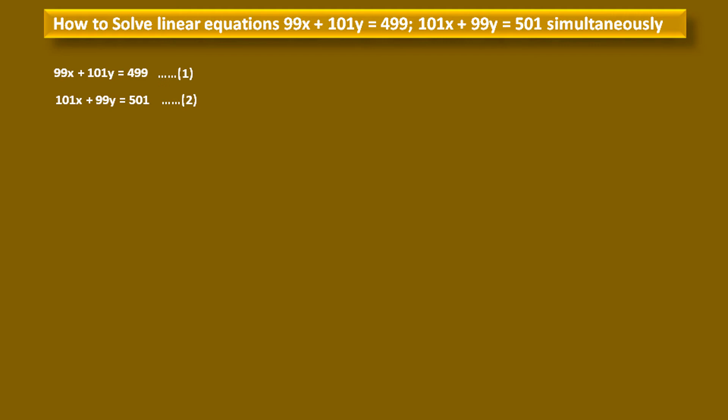We have to solve two equations: 99x + 101y = 499 as equation number 1, and 101x + 99y = 501 as equation number 2. We have to solve these two equations simultaneously, but the coefficients are very large numbers, so we have to make them easier to work with.